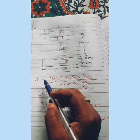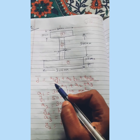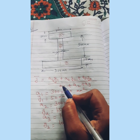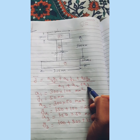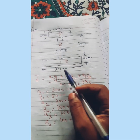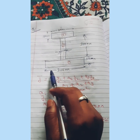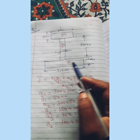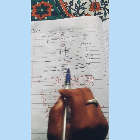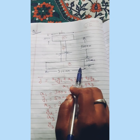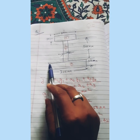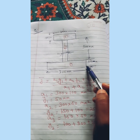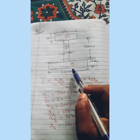Since there are three cross sections, we use the formula: y-bar = (A1·y1 + A2·y2 + A3·y3) / (A1 + A2 + A3). A1 is the area of section 1, which is 300 × 100 mm². Taking this bottom surface as the reference, y1 is at the middle of this rectangular section, so y1 = 50 mm.